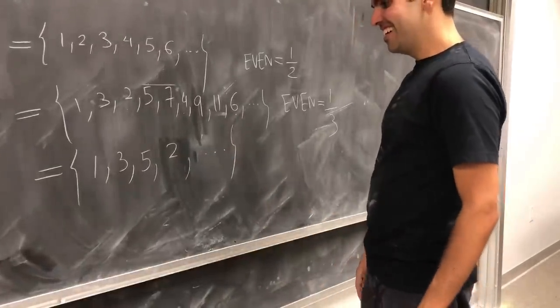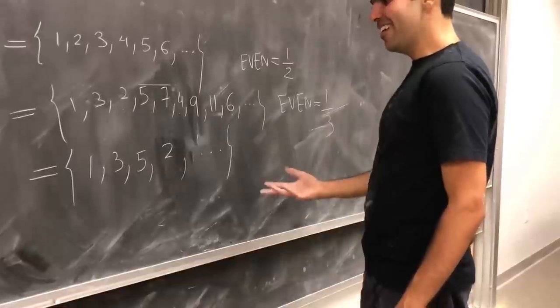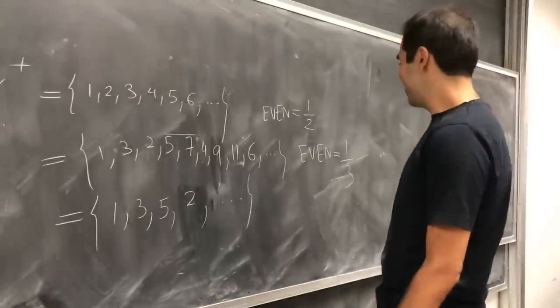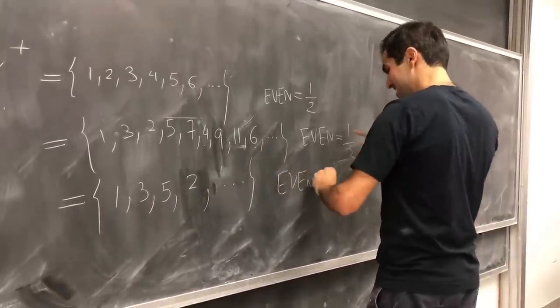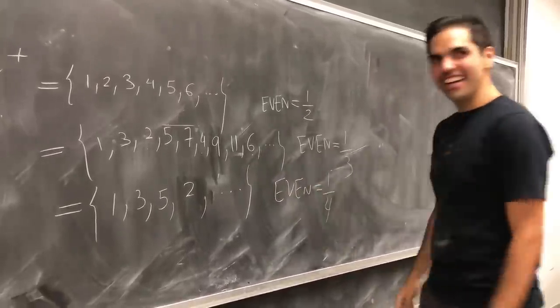And then the even numbers will be what? I mean, the percentage of the even numbers will be what? One fourth. One over four. What is this witchcraft? I don't know. I can't even. I can't even.